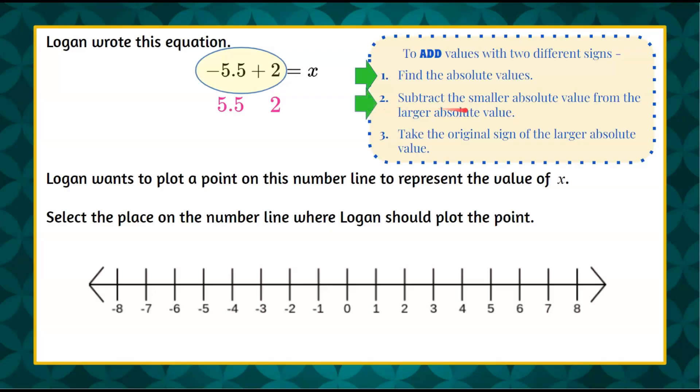So now we know that we are going to go to step 2, which says subtract the smaller absolute value from the larger, and they're already in order from greatest to least. So we're going to take the smaller, we're going to subtract it from 5 and 1 half, and it will equal x.